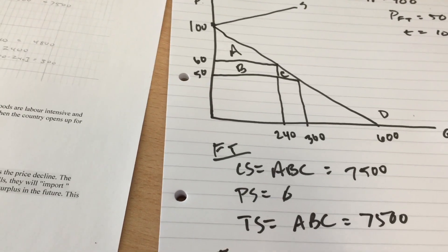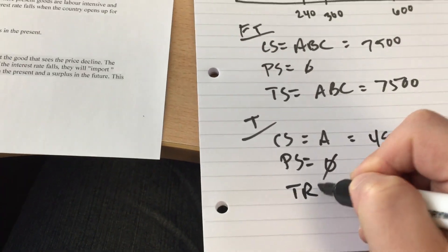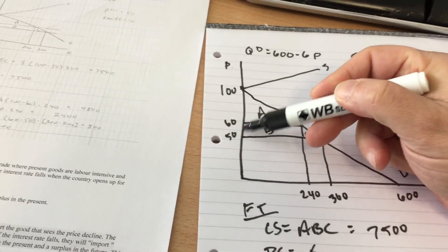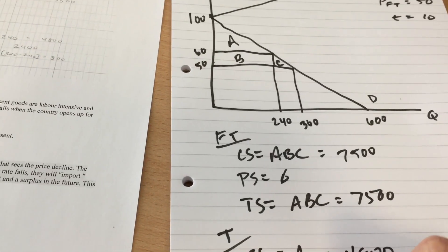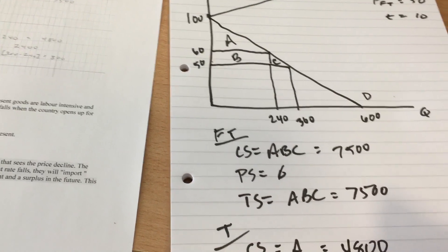Producer surplus is still zero. They don't make anything. Tariff revenues are the 10 euros in the tariff across the 240 that we import. So area B, and that gives us a total of 2,400.